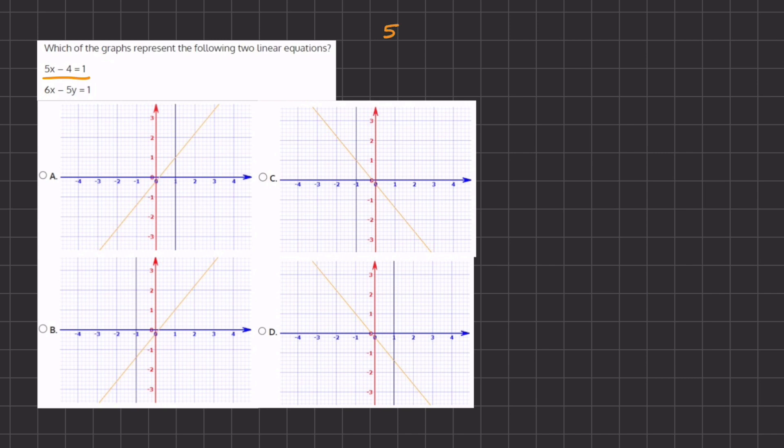So we have 5x minus 4 equals 1. In order to find the value of x, we want to isolate it, so we are going to add 4 on both sides. And we are left with 5x equals 1 plus 4, which is 5. Now, in order to completely isolate the x, we are going to divide 5 on both sides, and we have x equals 1.